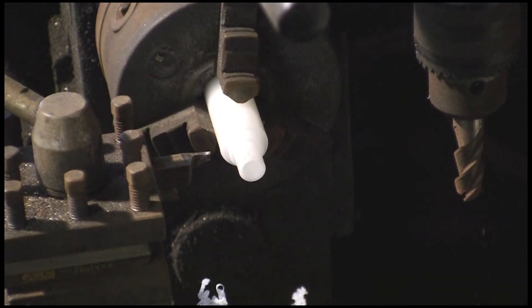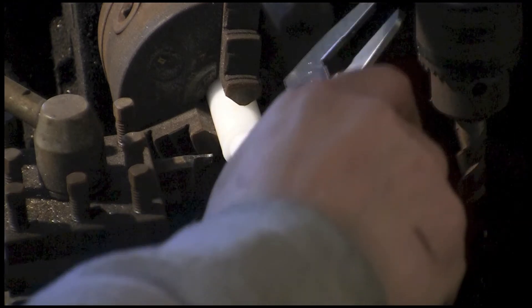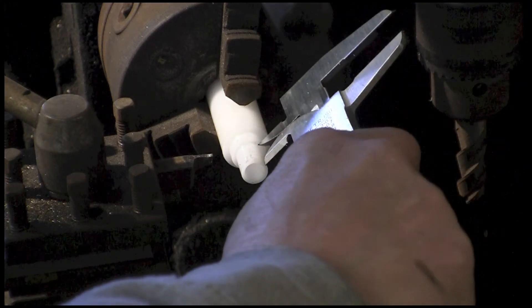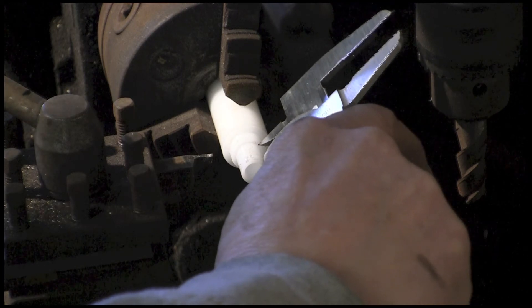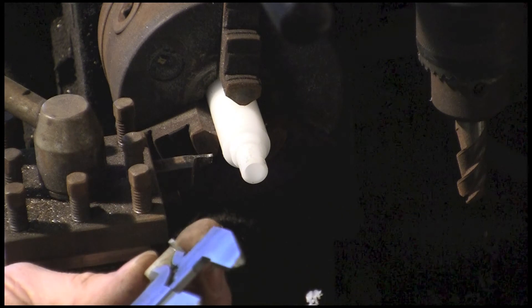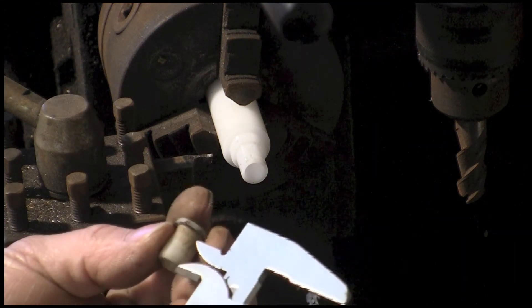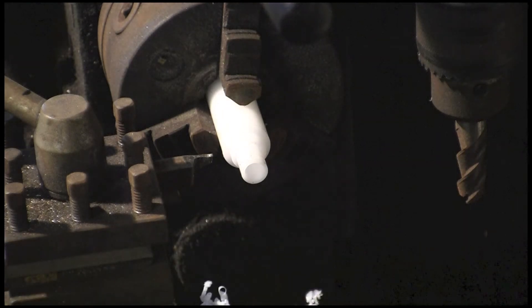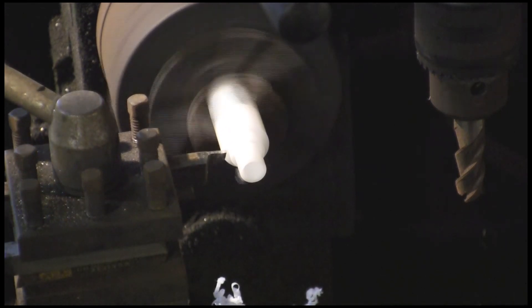Before I part it off, I'm just going to check the dimensions that I've got everything right. Check the length of the neck. Check it against the original. Can't really, it's ever so difficult to get the camera in here. The camera is sort of perched off to one side. I think that's about right. So we're just going to part it off.